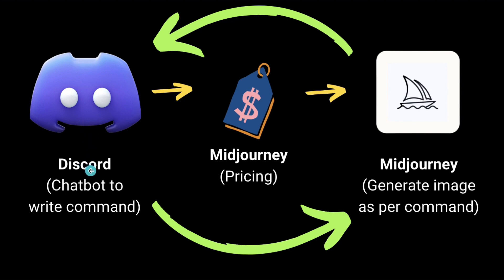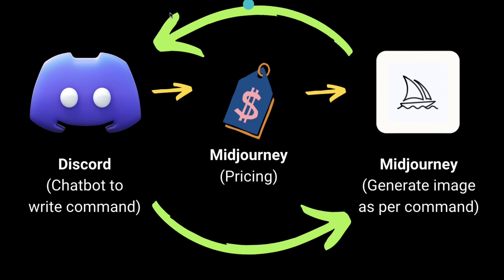Using Discord, which is a chat platform, you write commands and Midjourney will generate images according to those commands. Inside Discord, you give instructions to Midjourney specifying what type of image you want to generate. After you put in those instructions or commands, Midjourney will generate the image according to the command you give.